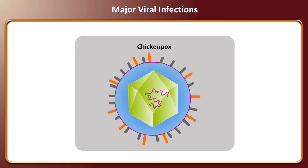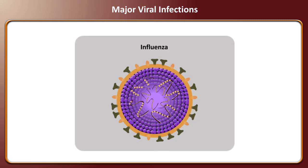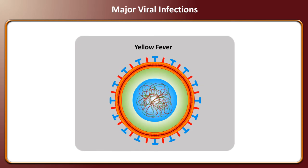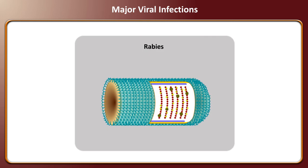Chickenpox is a highly contagious disease caused by primary infection with varicella zoster virus, VZV. Influenza is an infectious disease caused by the influenza virus. Yellow fever is a fatal disease caused by the yellow fever virus. Rabies is a fatal central nervous system, CNS, disease caused by the rabies virus.